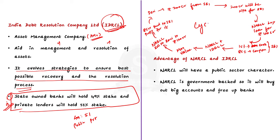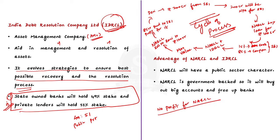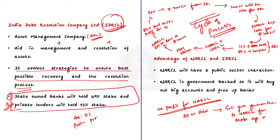This is what happens if NARCL is able to sell the asset for profit. Now let us see the other side of the coin. If NARCL is not able to sell the asset at a profit even after seeking the help of IDRCL — say Ms. Rani is a better negotiator and is not offering anything above 80 crores — in such a situation the government provides a guarantee to NARCL. The difference between what the commercial bank was supposed to get and what NARCL was able to raise will be paid by the government. So as per our example, the government will pay 20 crores to NARCL. This is how NARCL and IDRCL function and help to dispose of stressed assets.